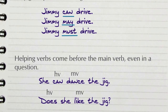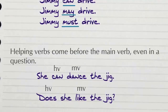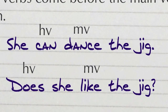It is important to note that helping verbs come before the main verb even in a question. For example, 'she can dance the jig' — the helping verb can comes before the main verb dance. The same thing can be seen in the question 'does she like the jig?' — the helping verb does comes before the main verb like.